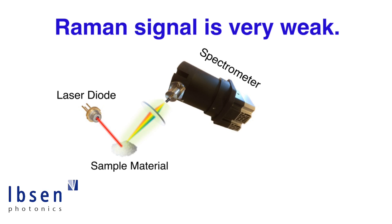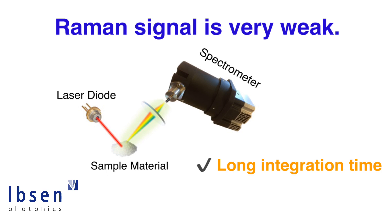For this reason, in Raman you use really long integration time. The integration time helps to collect photons as they come — you generate a charge in the detector every time there's a photon, so you wait for a long time and build up a strong signal. The downside is that when you build a strong signal, you also build a lot of noise or dark current electrons. To avoid that, you cool the spectrometers. So at least for high-end Raman, you always use long integration time and cooled detectors.